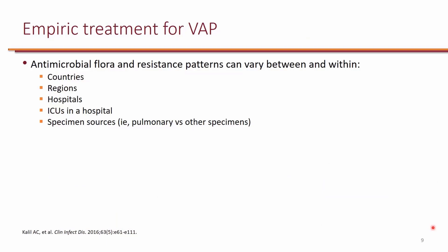Because VAP is caused by drug-resistant organisms, it is extremely important to be aware of drug-resistant variations. These variations in resistance patterns can occur at a country level, within regions, within different parts of a large city, as well as across hospitals. Even within a single institution, different ICUs can have different resistance patterns.